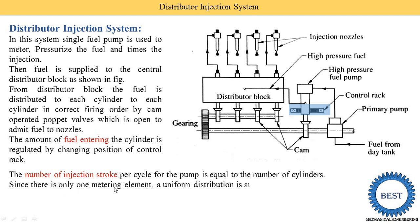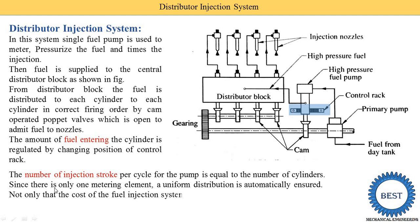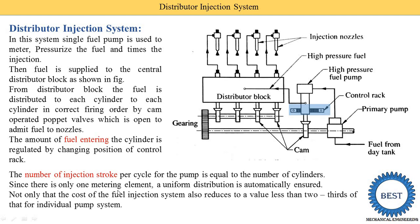Since there is only one metering element — that is, only one pump — uniform fuel distribution is automatically ensured. Additionally, the cost of the distributor injection system is reduced to less than two-thirds of that of an individual pump system. For example, if the cost of an individual pump system is 10,000 rupees, then the distributor injection system costs approximately 3,333 rupees.